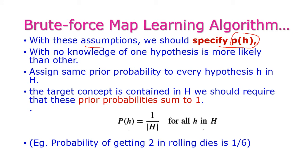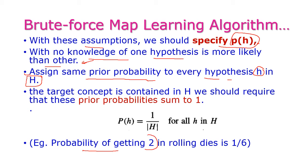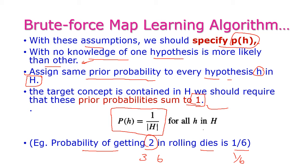With these three assumptions, we should specify P(H). With no knowledge that one hypothesis is more likely than another, all hypotheses should be different and we assign the same prior probability to every hypothesis in H. For example, the probability of getting 2 when rolling a die is 1/6, getting 3 is also 1/6, and getting 6 is also 1/6. So we assign the same probability for all hypotheses, because the sum of all those probabilities will be 1. Therefore, P(H) = 1 / |H|.